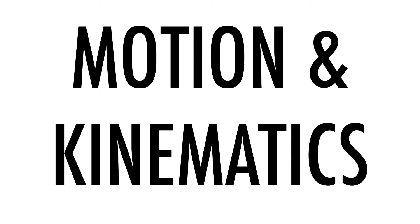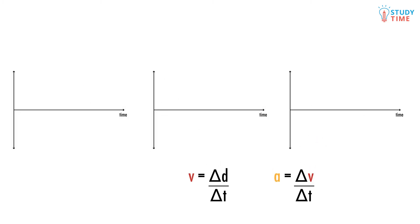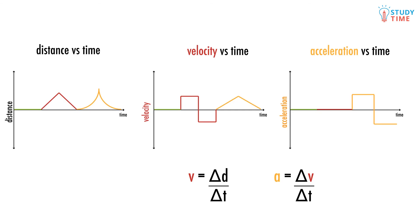Physicists love to use diagrams to get a clear picture of what's happening in a problem. Graphs are a great way of visualizing different concepts. Remember our old friends velocity and acceleration? Let's look at how they affect each other across three different graphs.